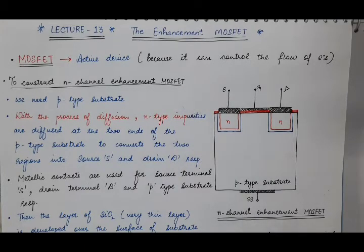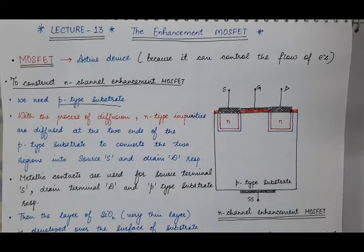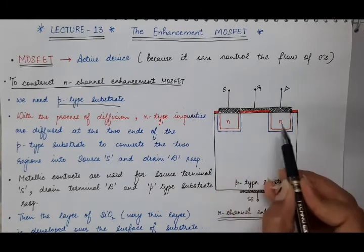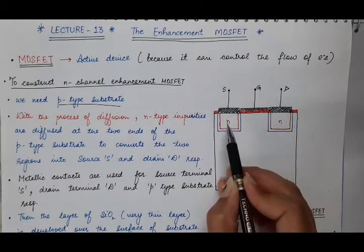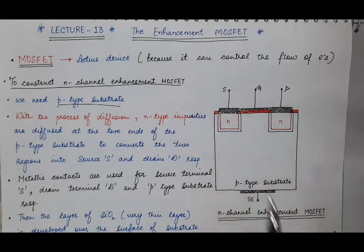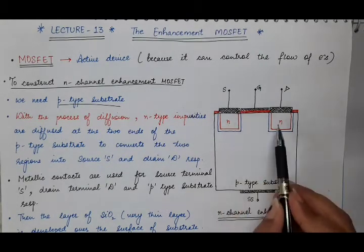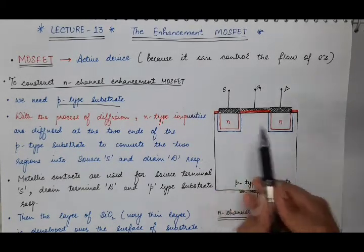As we are constructing an N-channel enhancement MOSFET, we first need a P-type substrate. Then, with the process of diffusion, we will diffuse N-type impurities at the two ends of the P-type substrate. With continuous diffusion of N-type impurities into this P-type region, the P-type region will get converted into N-type regions, and these two N-type regions will act as source and drain respectively.